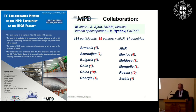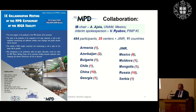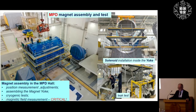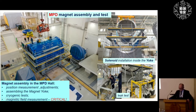The MPD collaboration has collected almost 500 scientists from 35 centers in 11 countries. You can see the superconducting magnet — a big magnet assembly in the MPD hall — and we are currently adjusting the yoke and installing the superconducting coil. We expect cryogenic tests and magnetic field measurements soon, and we hope our Serbian colleagues will help us in this.